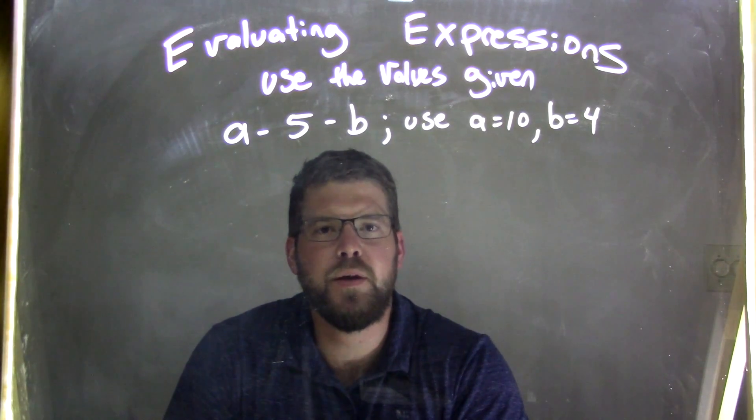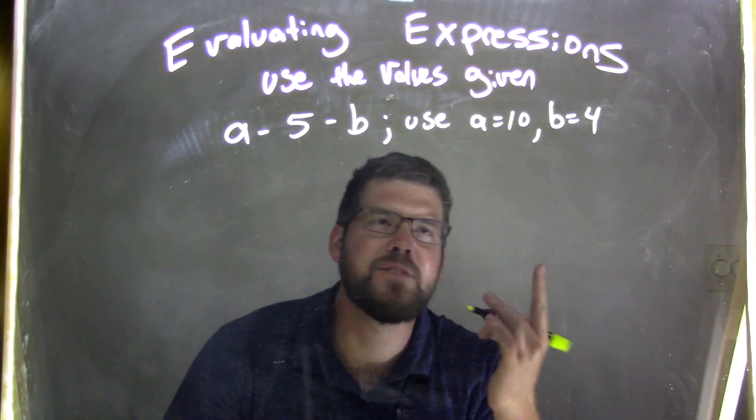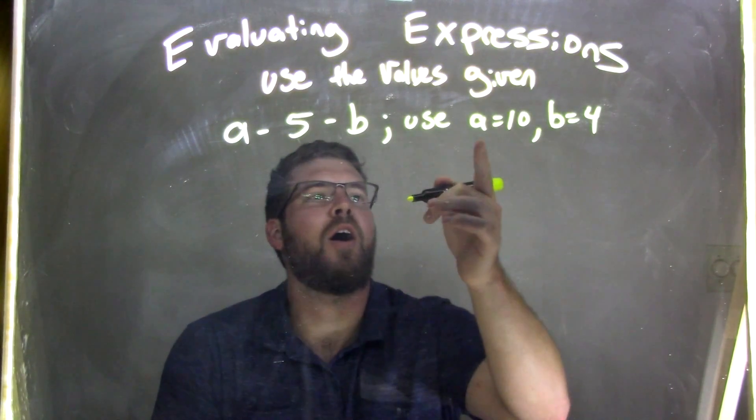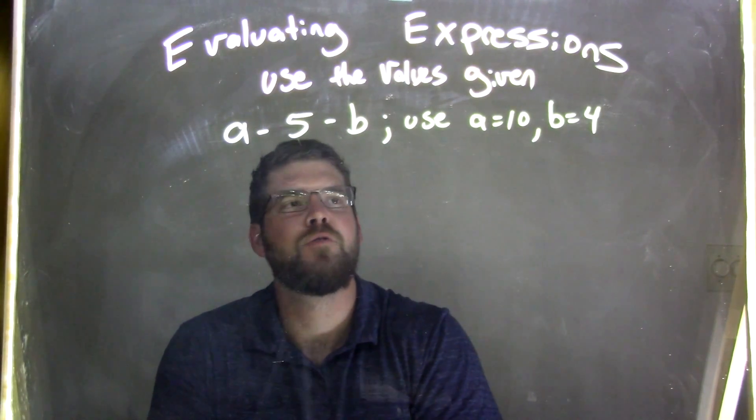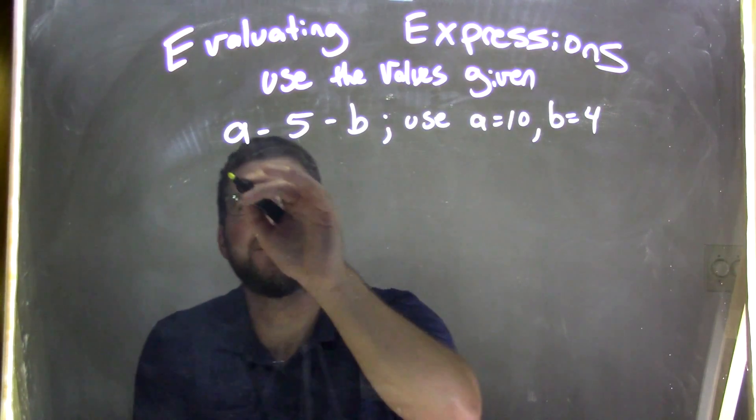Well, I have A minus 5 minus B, and I need to use A equals 10 and B equals 4. So our first step here is we substitute our numbers for our variables. So if A is 10, whenever I see A, I replace it with the number 10.